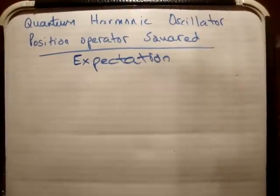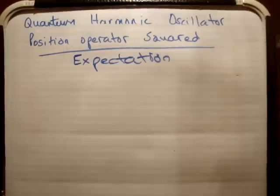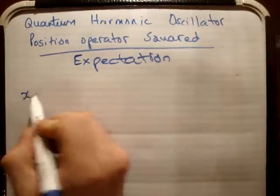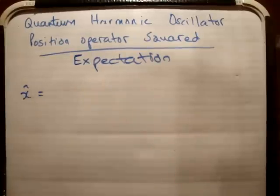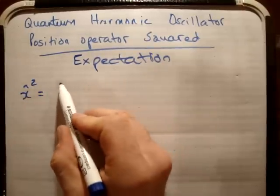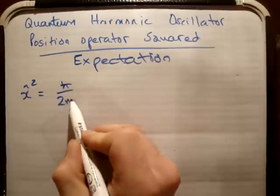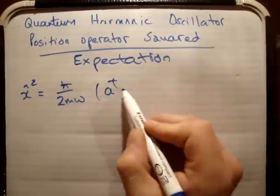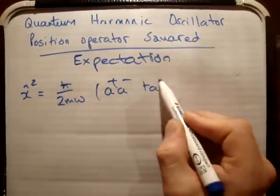In this video I'm going to calculate the average of the position operator squared. So in a previous video I showed you how you get the position operator squared and our answer was h bar over 2m omega times a plus a minus plus a minus a plus.